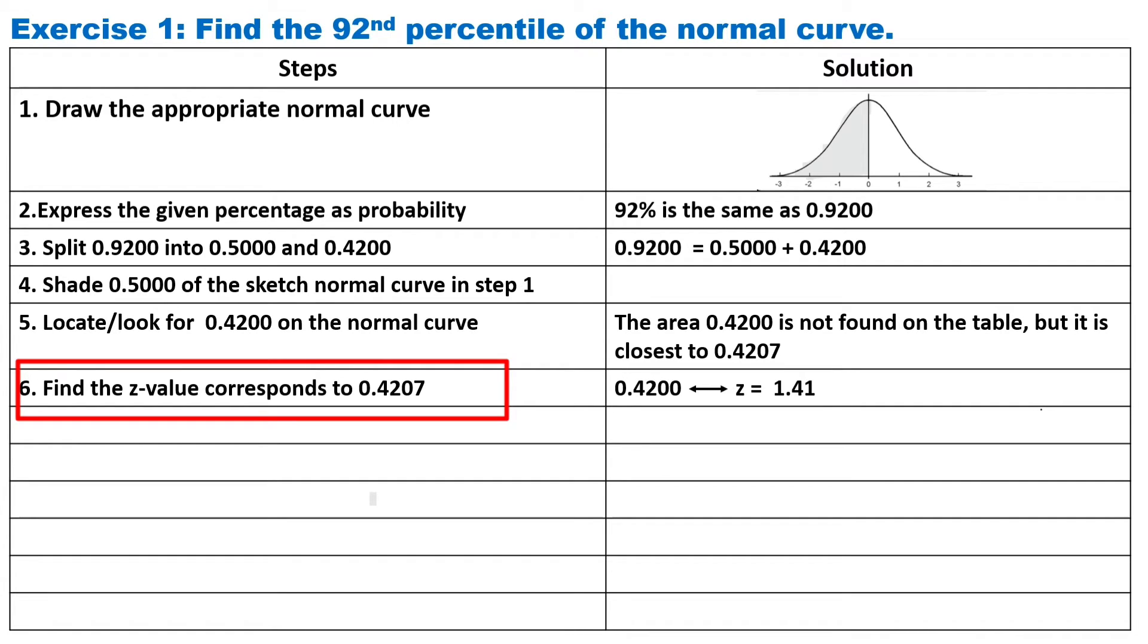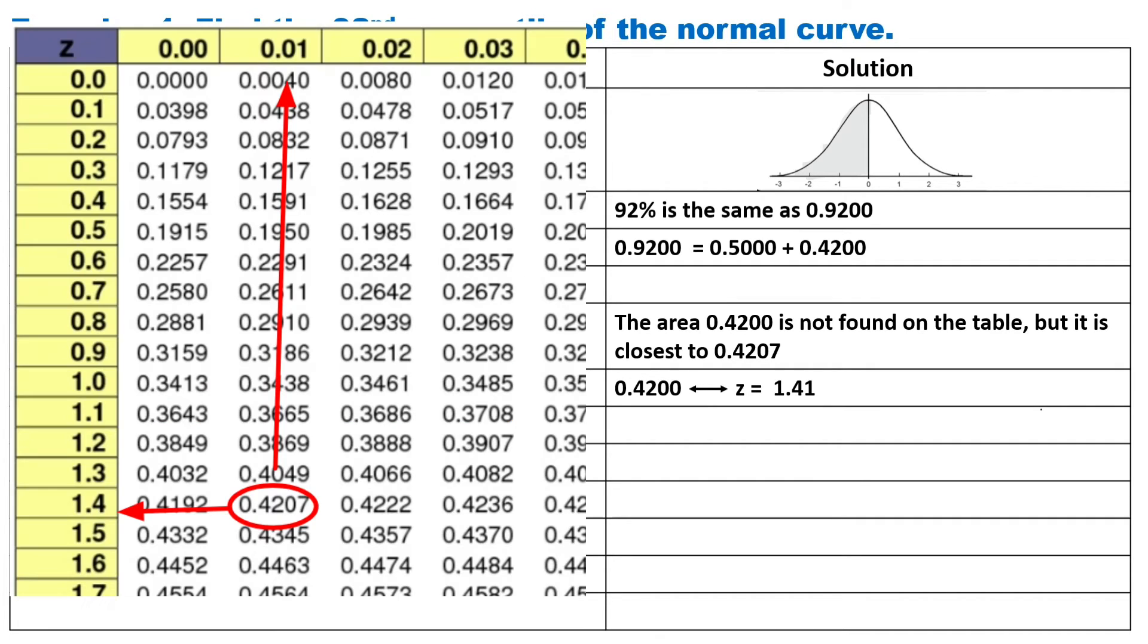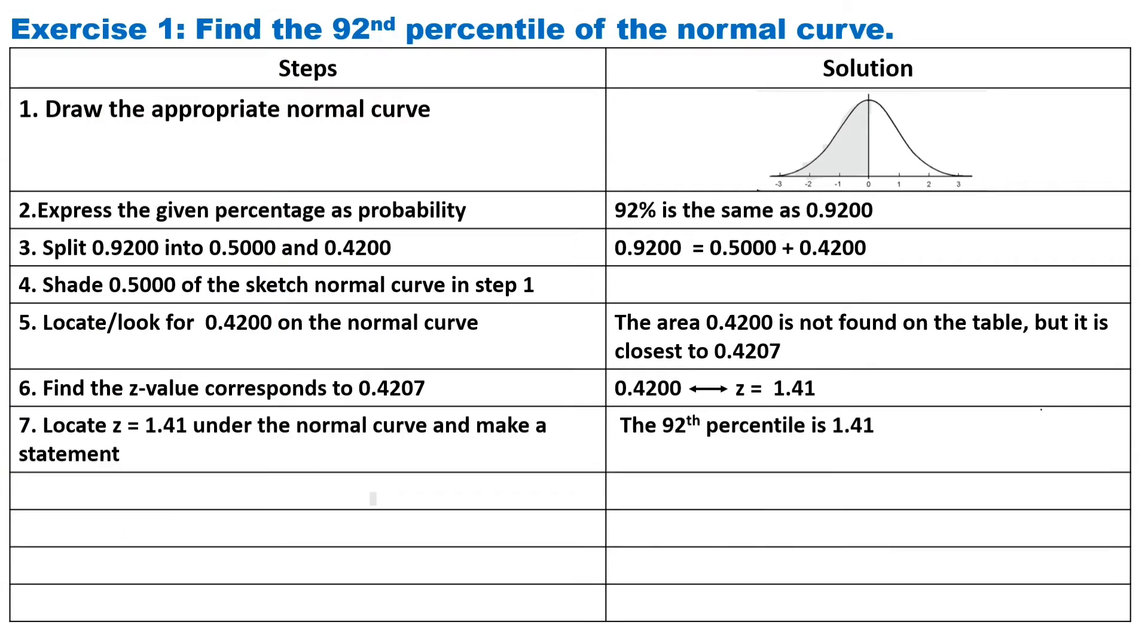Step six, find the Z-value corresponds to 0.4207 using the Z-table. 0.4207 is at the intersection of 1.41. Step seven, locate Z equals 1.41 under the normal curve and make a statement. The 92nd percentile is 1.41.